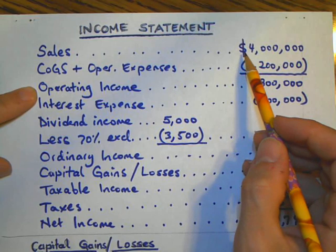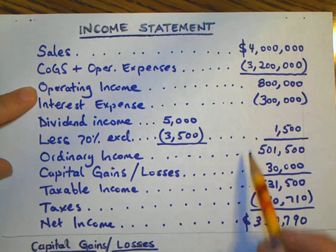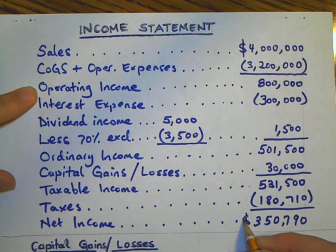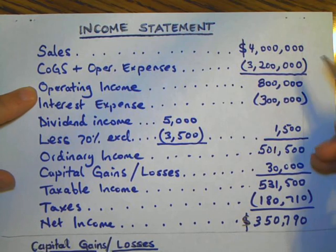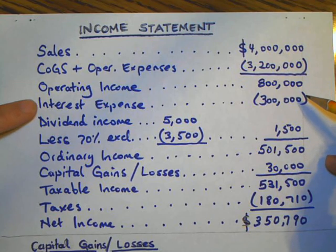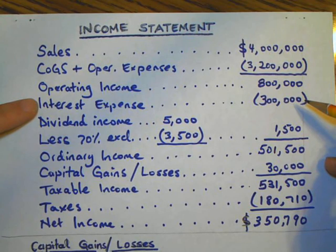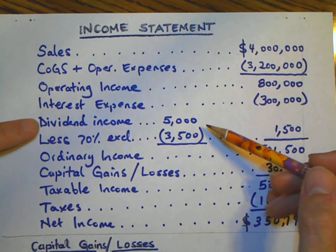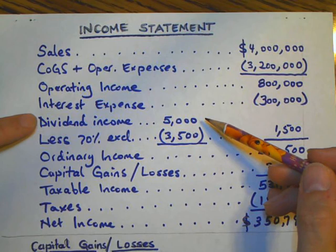I placed a dollar sign only for the first line of sales, and I won't use it again until the final net income line. Now that I have my operating income, the next item is interest expense, which I have to deduct because it's an expense that should be subtracted from the total. Another item is the dividend income — there's a small trick here.